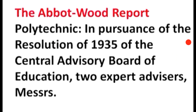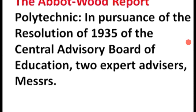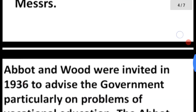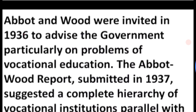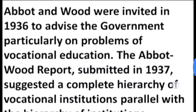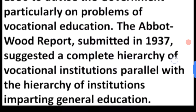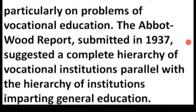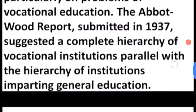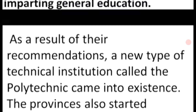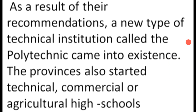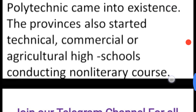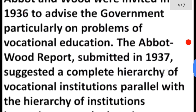In pursuance of the resolution of 1935 of the Central Advisory Board of Education, two expert advisors — Messrs Abbott and Wood — were invited in 1936 to advise the government particularly on the problem of vocational education. The Abbott Wood Report, submitted in 1937, suggested a complete hierarchy of vocational institutions parallel with the hierarchy of institutions imparting general education. As a result of their recommendations, a new type of technical institution called the polytechnic came into existence. The provinces also started technical, commercial, or agricultural high schools conducting non-literary courses.